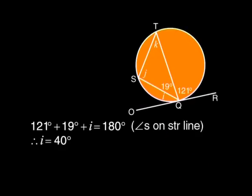That is easy. 121 degrees plus 19 degrees plus angle i equals 180 degrees, because OQR is a straight line. Therefore, i equals 40 degrees.